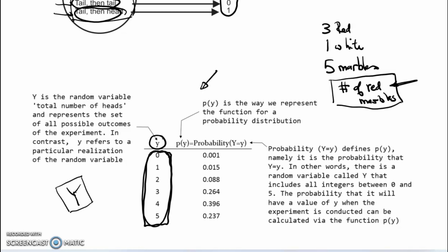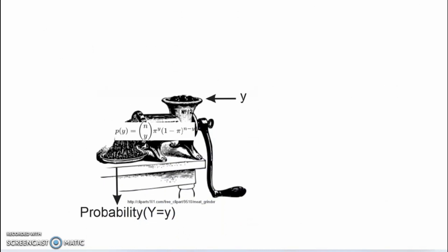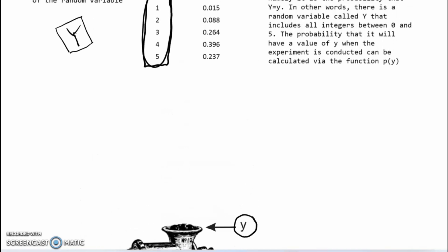This table shows the meaning of P of Y. P of Y is a function — it generates a probability distribution. Think of it like a meat grinder: what we put in is y, a particular realized value of the number of red balls when the experiment is done. What comes out the other end is the probability of uppercase Y being equal to lowercase y, where uppercase Y represents the set of all possible outcomes.